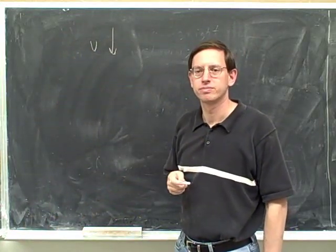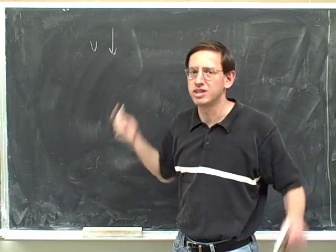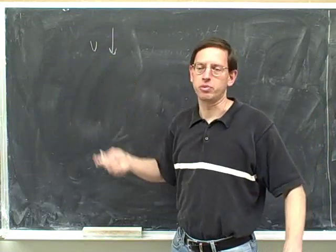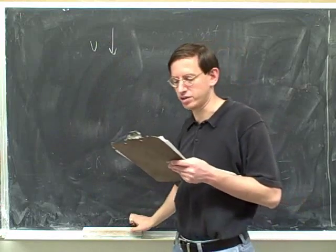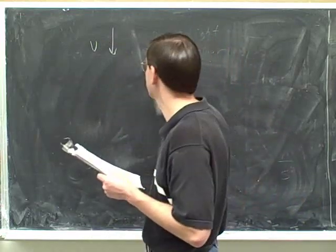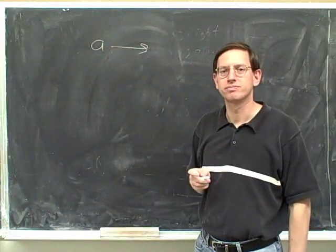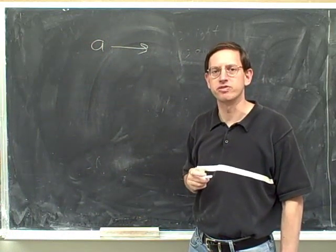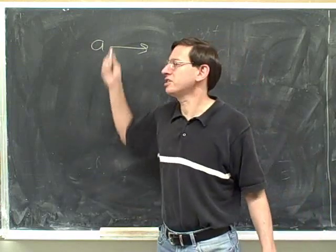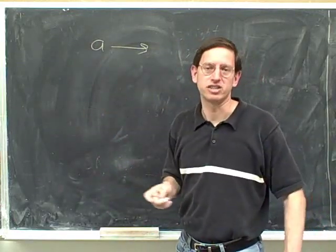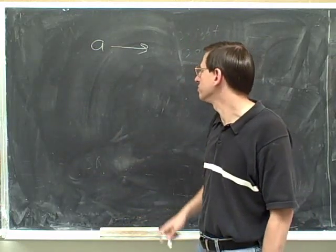Which way is this object accelerating? Trick question — we have no idea. We know it's moving down, but the way you're moving has nothing to do with which way you're accelerating. There's no way to tell which way this object is accelerating. Which way is this object moving? Who knows? The acceleration doesn't tell you which way you're moving. We have no idea which way this object is moving — it's the velocity's job to tell you which way you're moving.